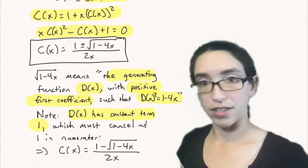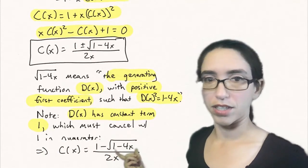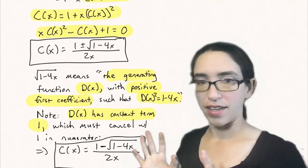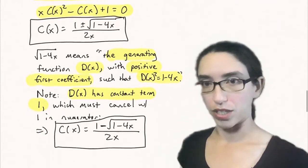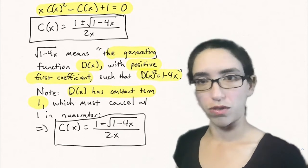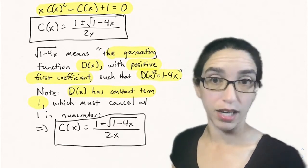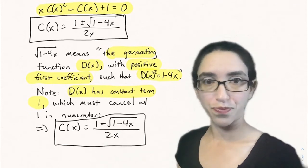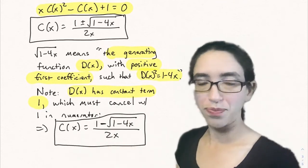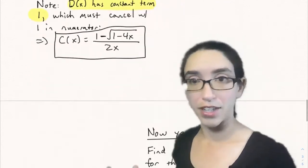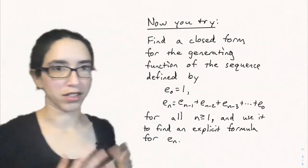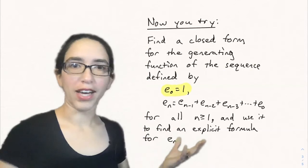So c(x) equals (1 minus the square root of 1 minus 4x) over 2x. In a future video later in the course, we'll see how to compute that generating function square root as an actual power series, and derive the explicit formula 1 over (n plus 1) times (2n choose n) for the Catalan numbers directly. This is actually a much easier proof than the difficult bijective proof seen in the Catalan numbers video. So there's a closed formula for the Catalan number generating function, and we also saw how to solve linear recurrences using generating functions, with the characteristic polynomial naturally arising.